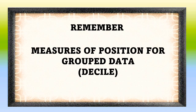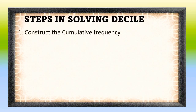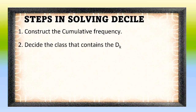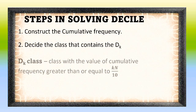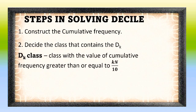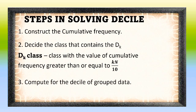To summarize the things we have learned about finding the measures of position for group data, particularly the decile, here are the steps: First, construct the cumulative frequency. Second, decide the class that contains D sub K using the formula K times N all over 10. And finally, compute for the decile of group data.